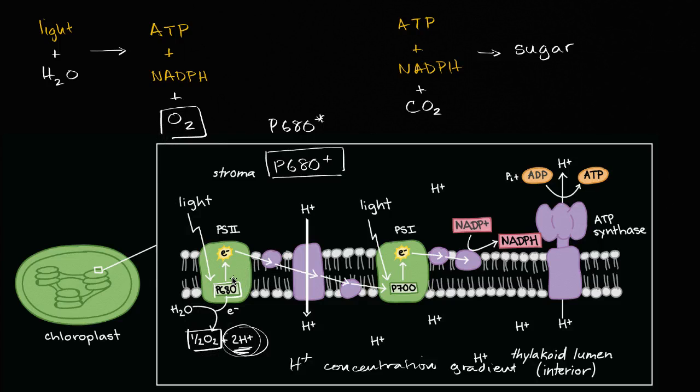So far, we've talked about how the oxygen gets produced. We've talked about how the ATP gets produced. What about the NADPH?